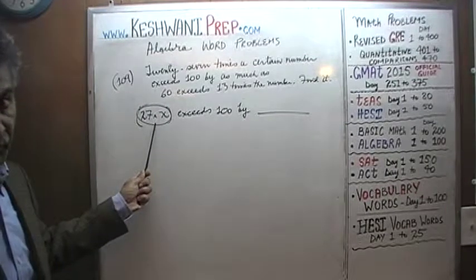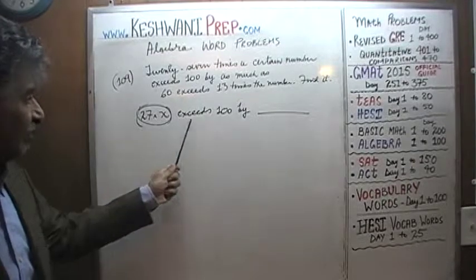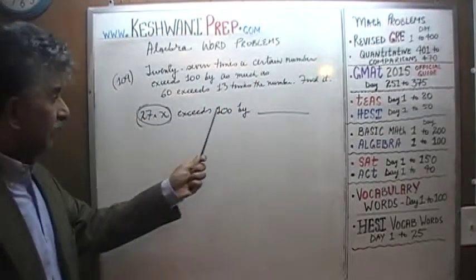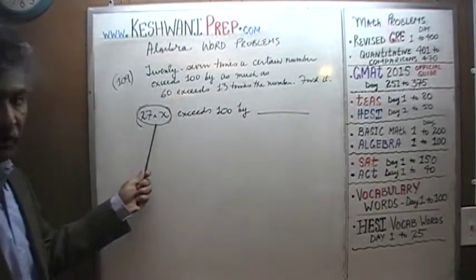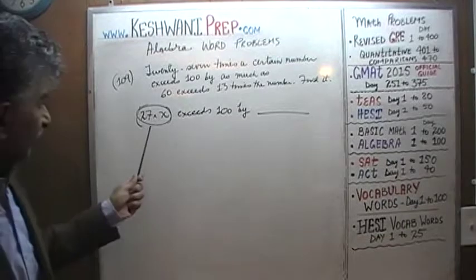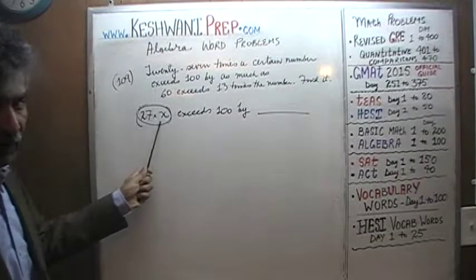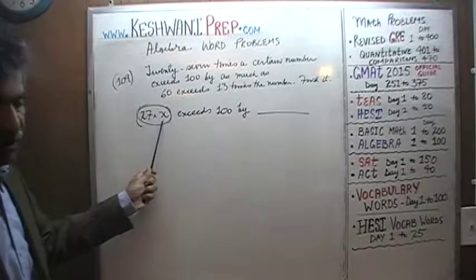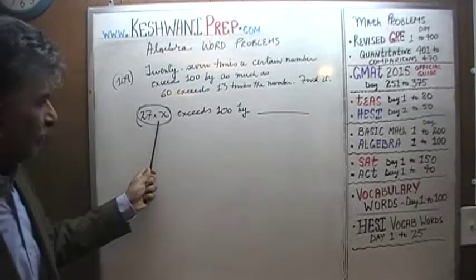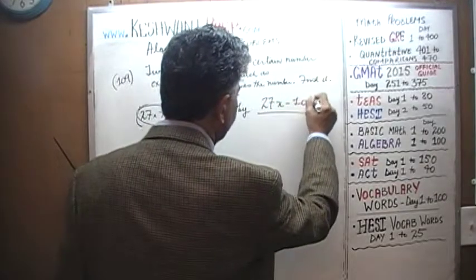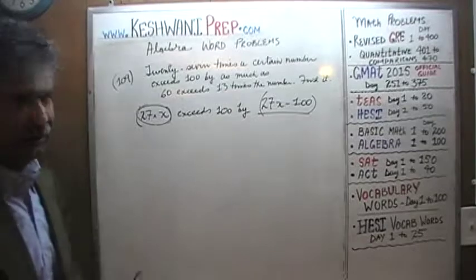For example, 103 exceeds 100 by 3 — found by 103 minus 100. Similarly, 160 exceeds 100 by 60, found by 160 minus 100. So 27X exceeds 100 by simply 27X minus 100. That's the difference between the two.